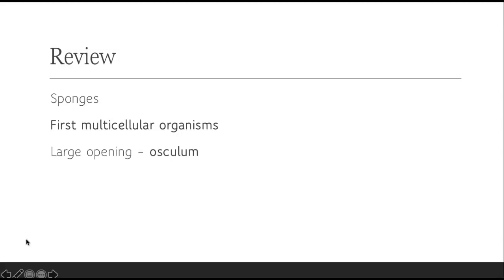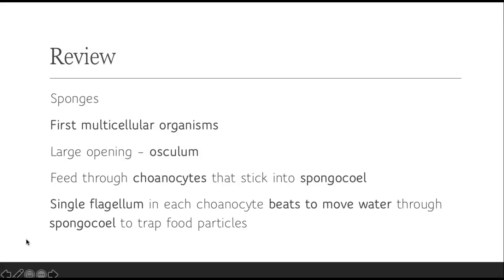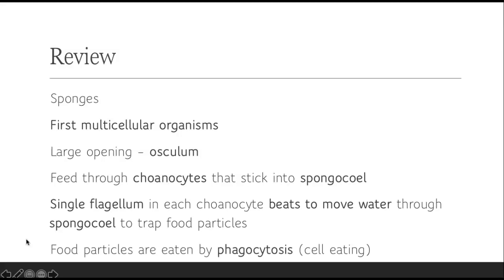Then we talked about sponges. Sponges are the first multicellular organisms. That large opening on the top is called an osculum. They're fed through choanocytes that stick into the sponge's cell. The choanocytes have a single flagellum that beats, and there are many of them. It moves the water through the sponge's cell and traps food particles. Those food particles have to be very tiny, microscopic, smaller than cell size. And those food particles get eaten by cell eating, which is called phagocytosis. That's how sponges eat.